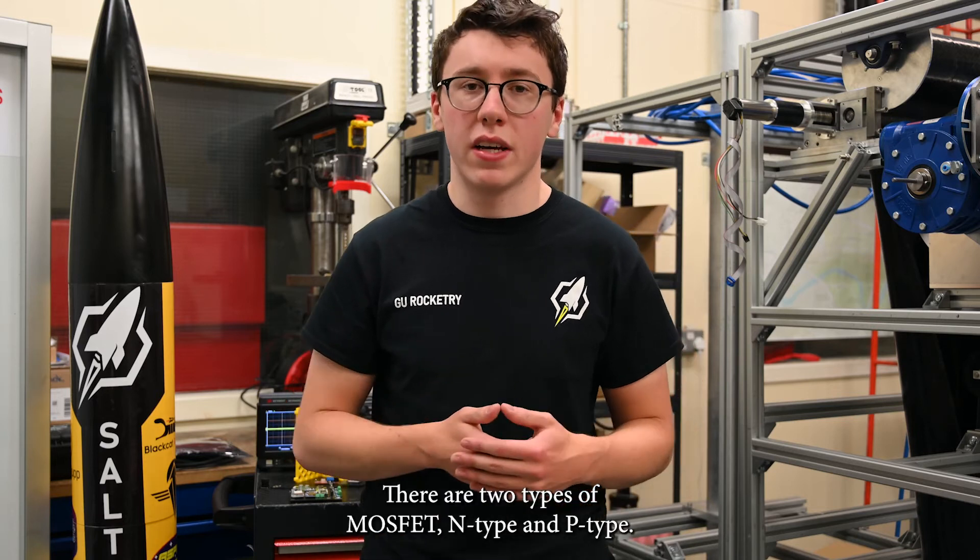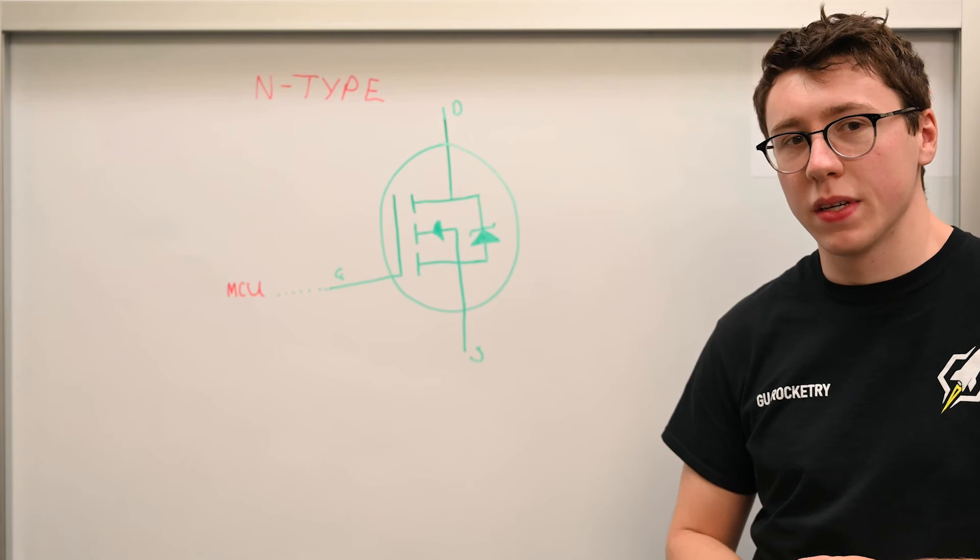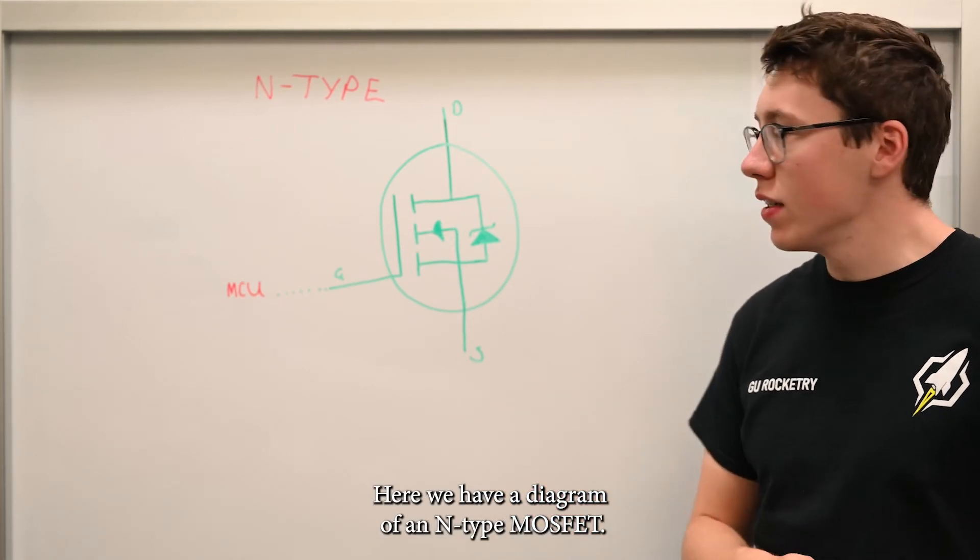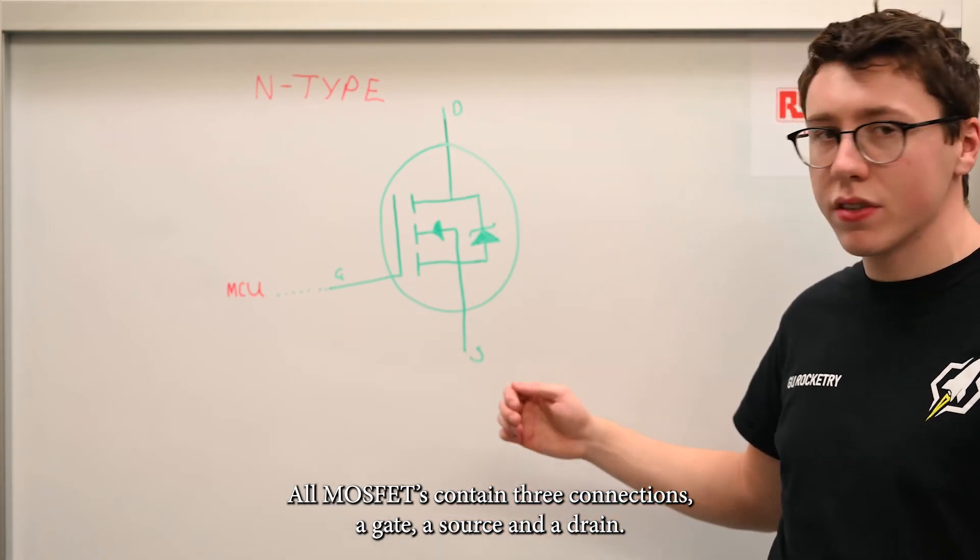There are two types of MOSFETs: an N-type MOSFET and a P-type MOSFET. Here we have a diagram of an N-type MOSFET. All MOSFETs contain three connections: a gate, a source and a drain.